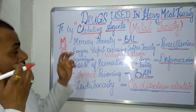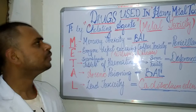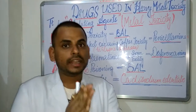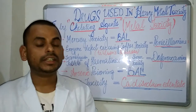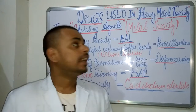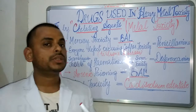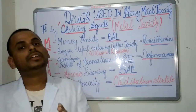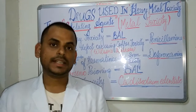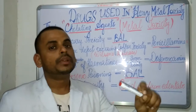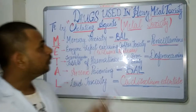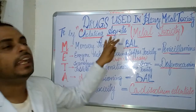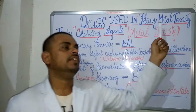When a metal is present in a toxic dose in the body, the drugs used to treat this act by forming chelating complexes. These chelating agents are used to eliminate toxic metals from the body when they are in excess. So the mode of action of drugs used in metal toxicity is through chelating agents.